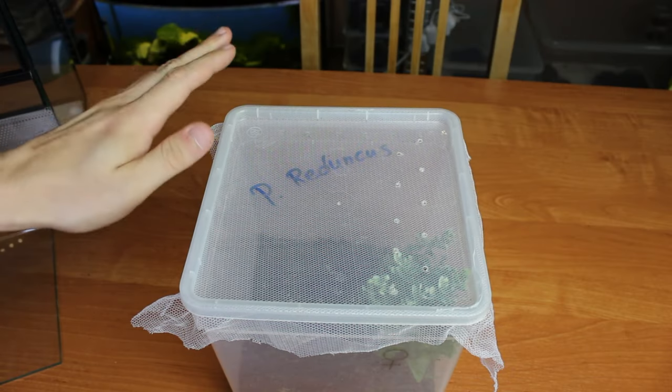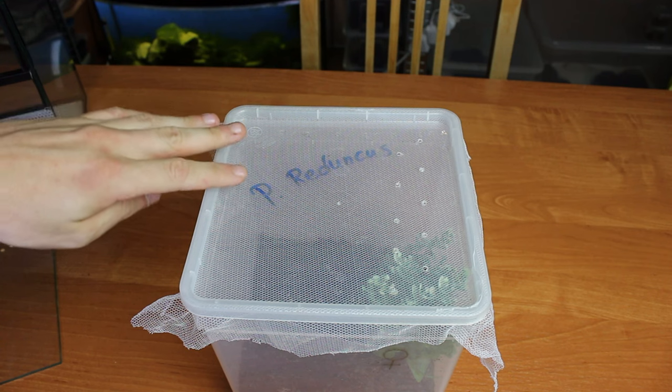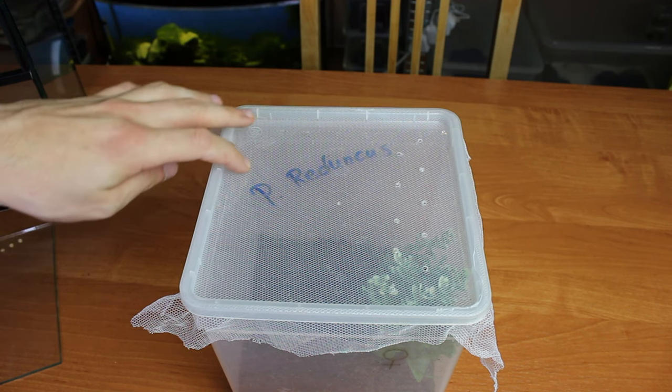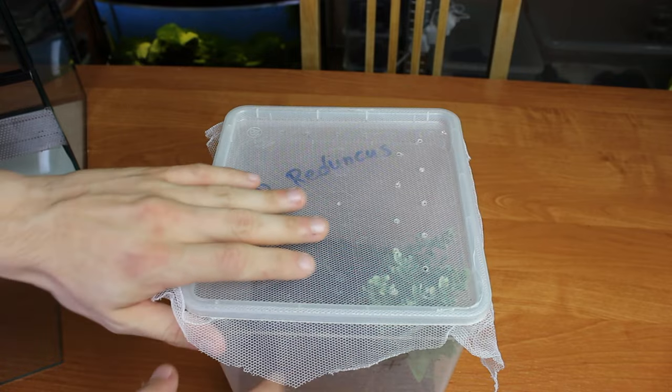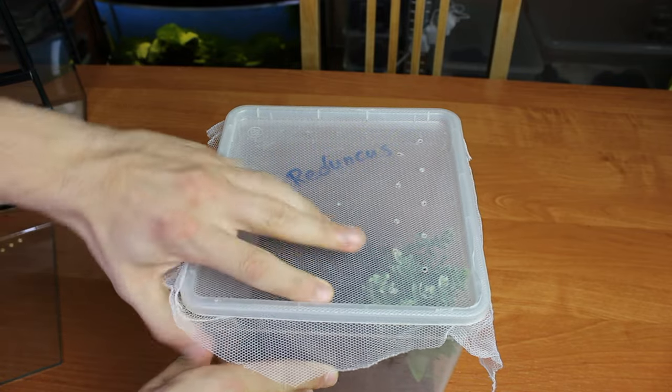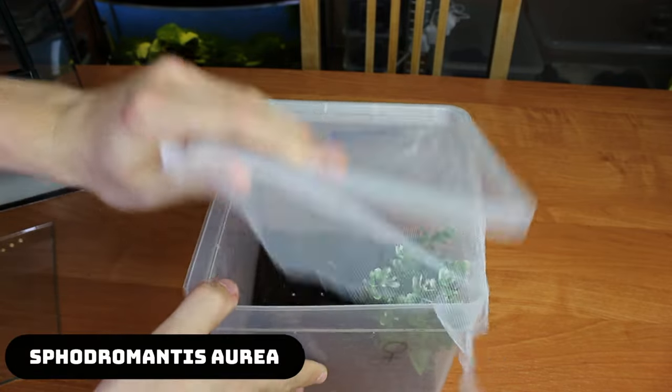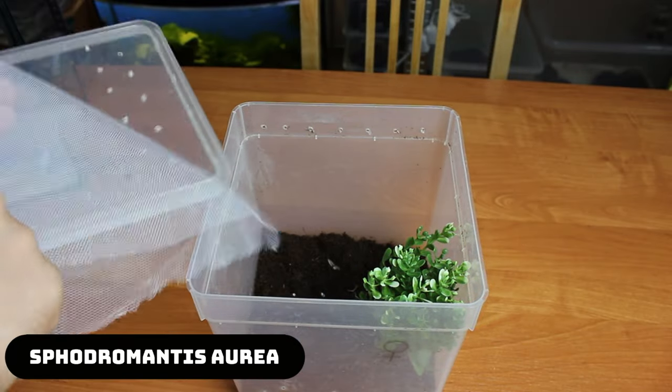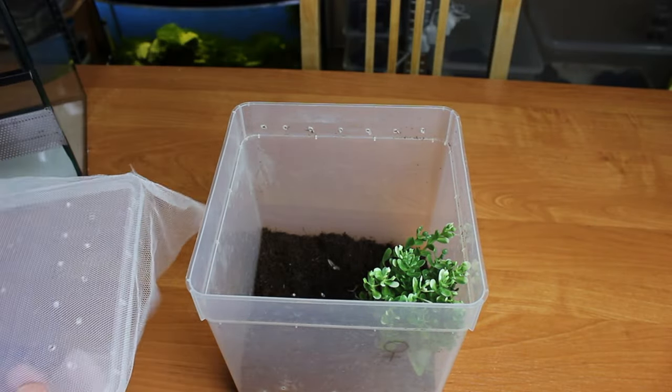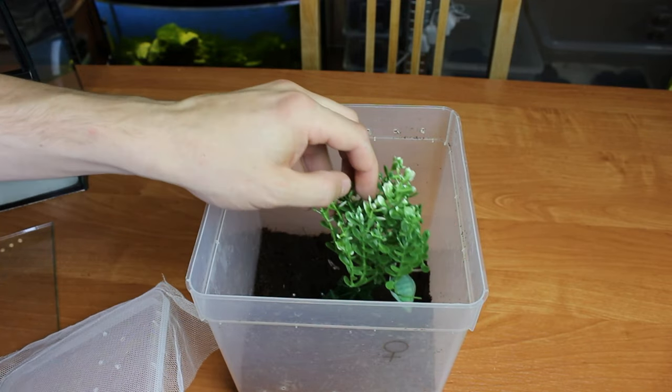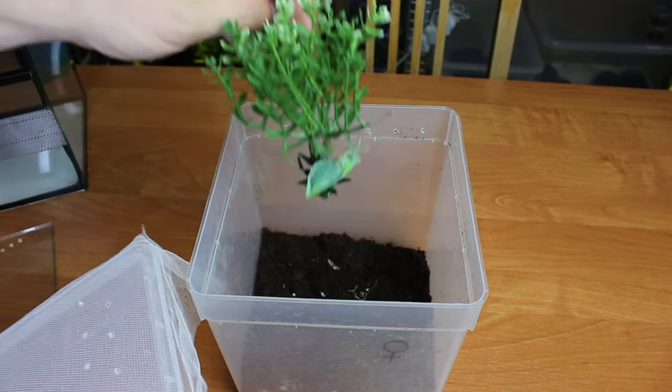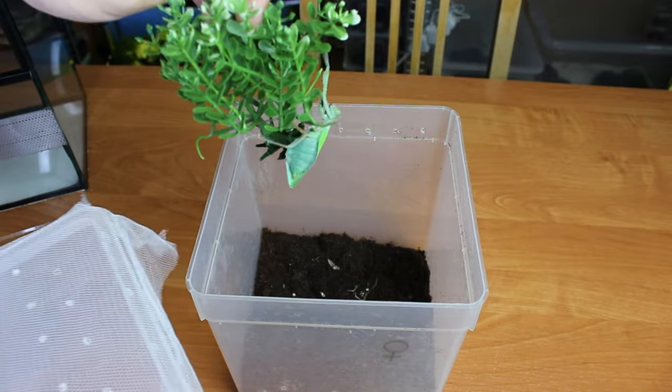Alright everyone, here's the star of this episode. It's not a Psalmopeus reduncus like the name is suggesting right here. Inside this container is a mantis. Here is the Sphodromantis Aurea. It's a big green mantis and just like predicted, this one came out as a female. Look at that gorgeous little bug.